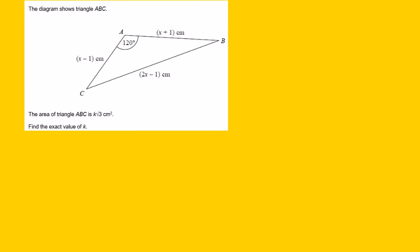Now you can see the sides of the triangle are given as expressions. So you've got 3 sides given and 1 angle given. And on the question it says the area of triangle ABC is K√3 cm². Find the exact value of K.